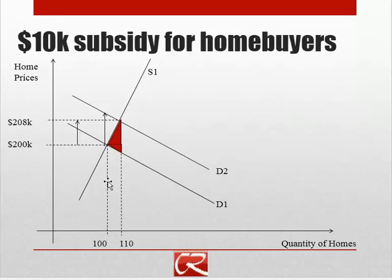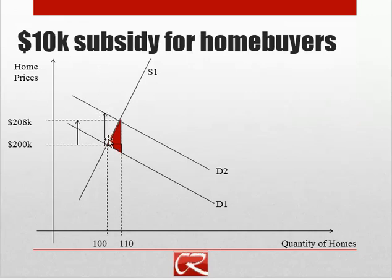Let's suppose we have a $10,000 subsidy paid to home buyers. The demand curve is going to shift up by $10,000, causing a change in the market price — in this case of $8,000 — because that's where our new intersection of demand and supply is. Notice that if the supply curve had been 100% vertical, all that would have happened is we would have pushed up price, with no change in quantity.